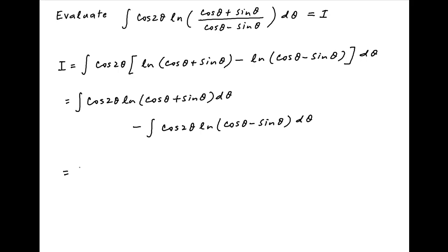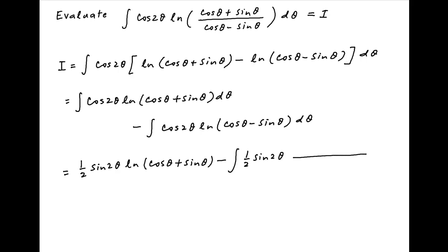Integrating by parts, the first term equals half of sin 2θ times ln(cos θ + sin θ) minus the integral of half of sin 2θ times the derivative of ln(cos θ + sin θ), which is 1/(cos θ + sin θ) multiplied by (−sin θ + cos θ) dθ.